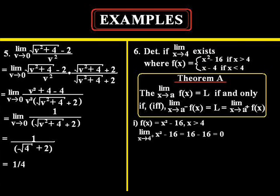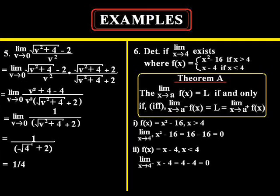Now in order for this limit to exist the limit as x approaches four from the left of x minus four must also be equal to the first part which was zero. So let's check. F of x equals x minus four for x less than four. So the limit as x goes to four from the left of x minus four equals four minus four and that's equal to zero.